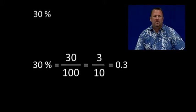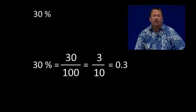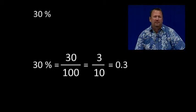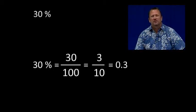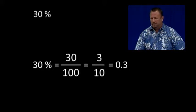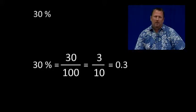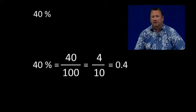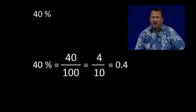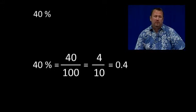30% is equal to 30 hundredths, which is equal to 3 tenths, which is equal to 0.3. 40% is equal to 40 hundredths, which is equal to 4 tenths, which is equal to 0.4.